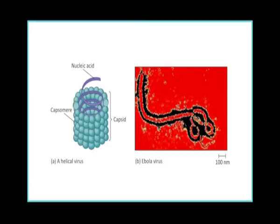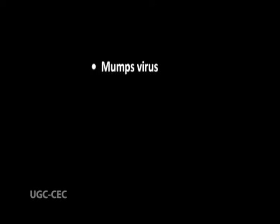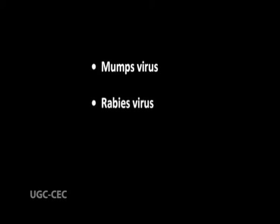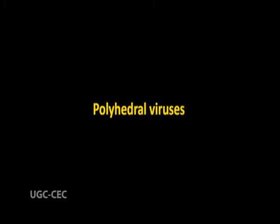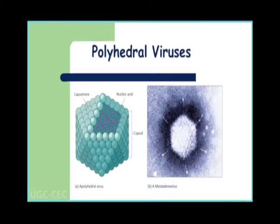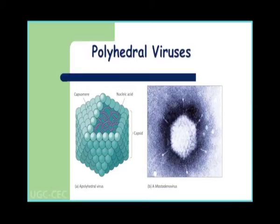Helical viruses can have single-stranded or double-stranded nucleic acid. The best examples are mumps virus, rabies virus, and tobacco mosaic virus. Another group of viruses is called polyhedral viruses. Polyhedral viruses are those which have complex symmetry with eight or more corners. In these viruses, the nucleic acid is packed as an integrated unit at the center in an unknown manner. They have been further classified into subgroups on the basis of number of corners.